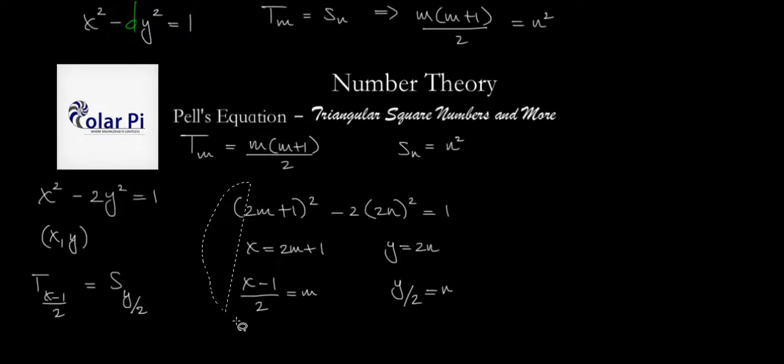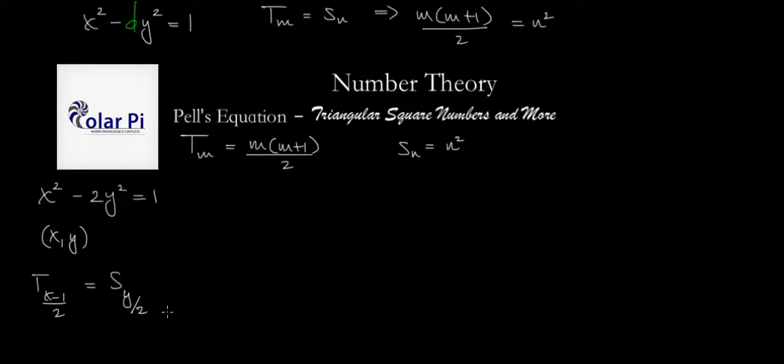Since we know that x squared minus 2y squared equals 1 has 3, 2 and 17, 12 as its first pair of solutions for positive x and y, we see that x is 3 and y is 2 in this situation. Which means that T_{(3 minus 1) divided by 2} will have to equal S_{2 divided by 2}. That says 3 minus 1 is 2 divided by 2 is 1. That says T_1 has to equal S_1, which we know is true because both T_1 and S_1 are equal to 1.